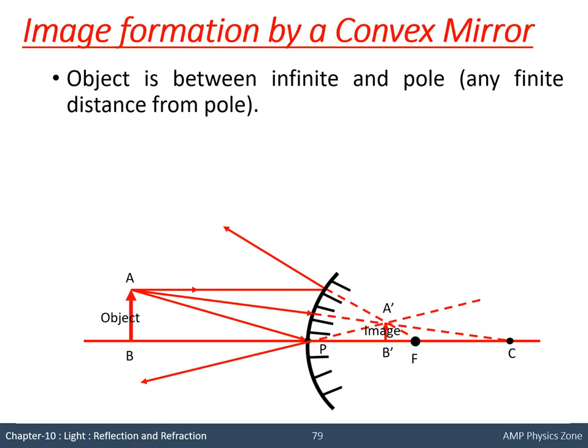Instead of three rays, you only need to select any two. Ray one: parallel to the principal axis — after reflection it appears to diverge from focus. Ray two: directed towards the center of curvature — reflects back along the same path. Ray three: directed towards the pole — obeys the law of reflection, reflected at the same angle as incidence. Extending these back, all three meet at point A'. Then drop a foot of perpendicular to the principal axis to get B', so A'B' is the image of AB.